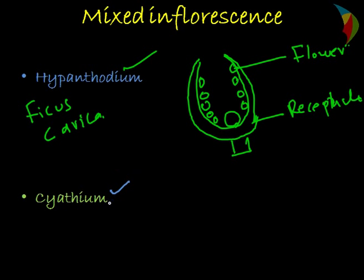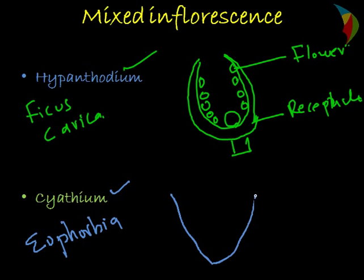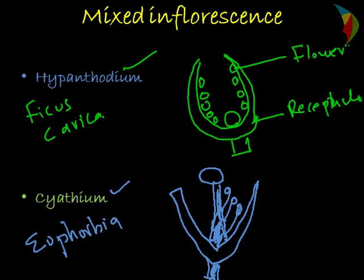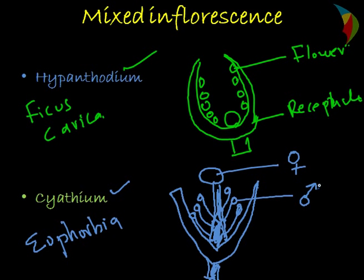The second type is the cyathium type. The typical example of cyathium type is Euphorbia. In the structure, you have a particular element in between which forms a female flower, and laterally you have male flowers arranged. So this is the cyathium type of inflorescence — you have a female flower and male flowers arranged around it.